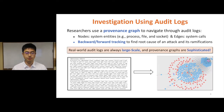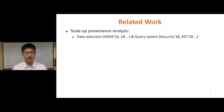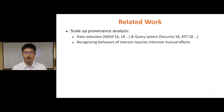However, in the real world, audit logs are always large scale, and the provenance graphs are too sophisticated to analyze. Related work tries to scale up provenance analysis by eliminating irrelevant system entities or improve the efficiency of log-query systems. However, they do not capture semantics behind low-level data and leave behavior recognition to an analyst. That is, recognizing behaviors of interest and detecting threats still require intensive manual efforts.